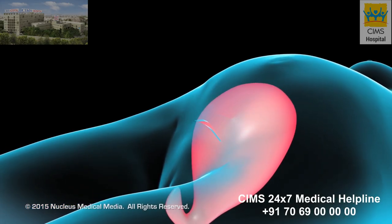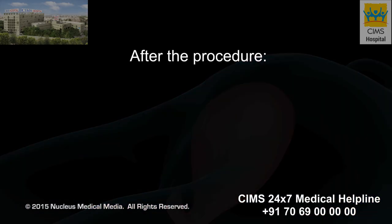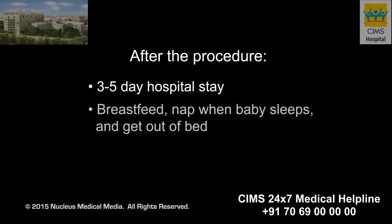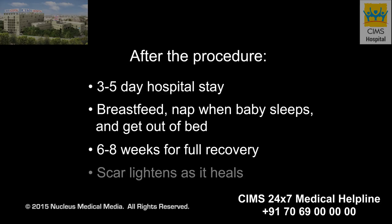This typically takes about 45 minutes. The hospital stay after a cesarean section is usually three to five days. During this time, you will be encouraged to breastfeed, nap when the baby sleeps, and get out of bed often. While most patients are able to take care of their new baby soon after the procedure, full recovery may take six to eight weeks.